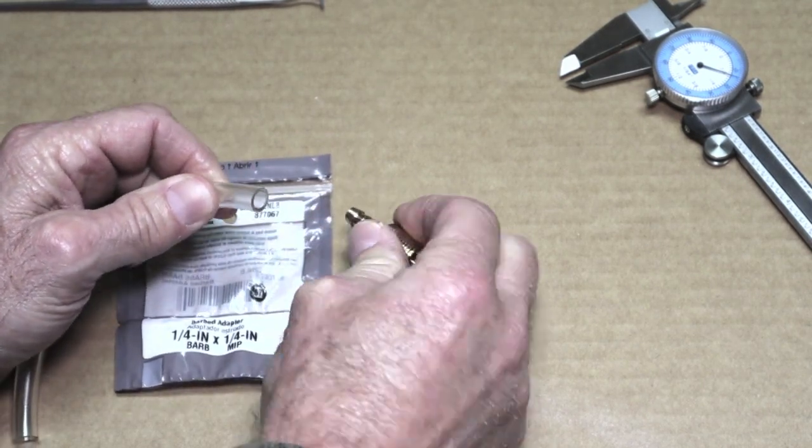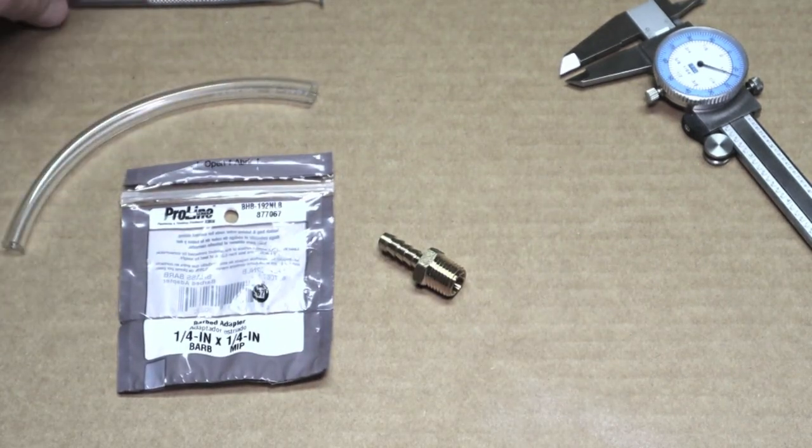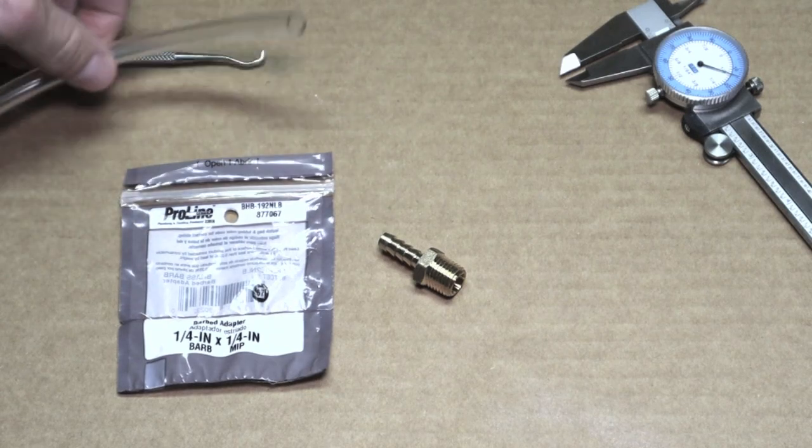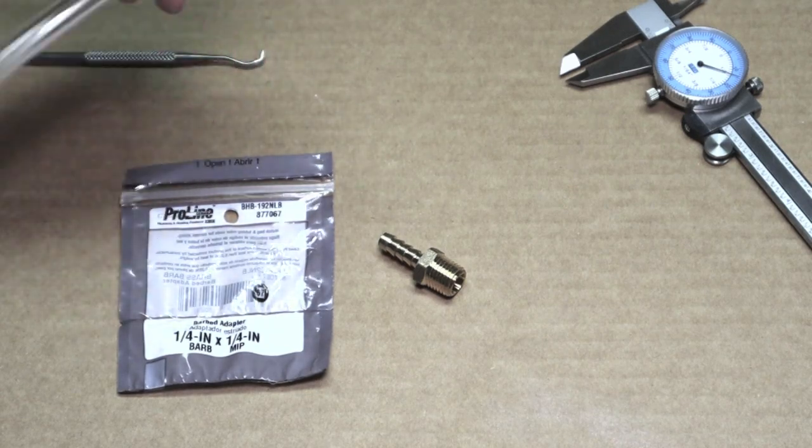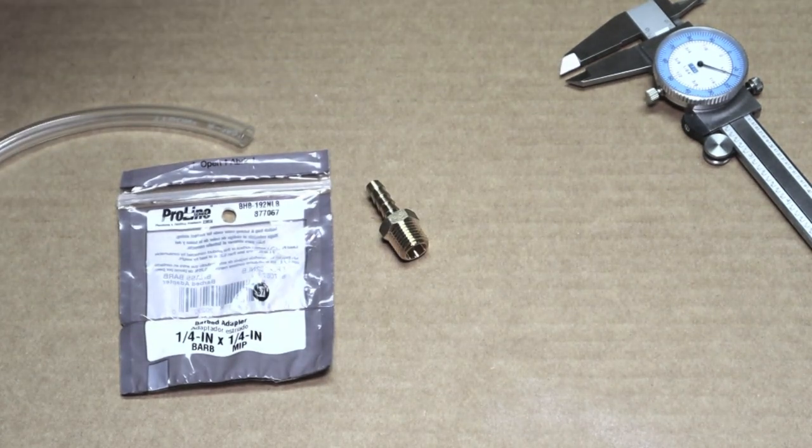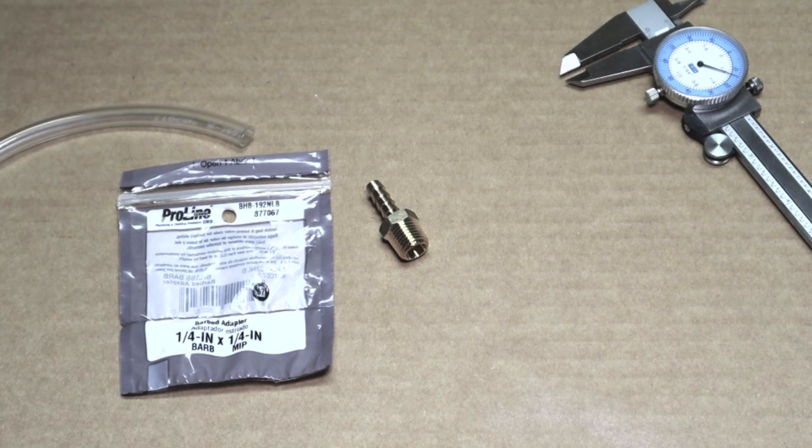In this application, it's going to be for a dehumidifier that has a pump in it. And we're going to run a piece of Tigon tubing or any flexible quarter inch inside diameter line. It's going to run straight up and tap into, it's located in a basement, and tap into a PVC drain line.